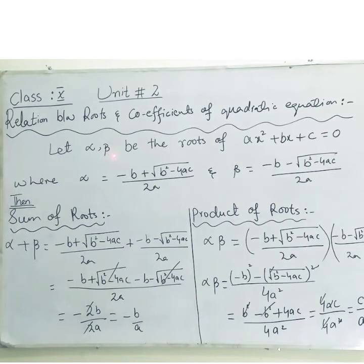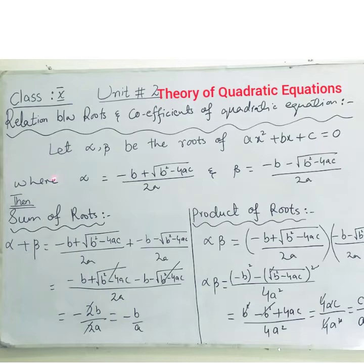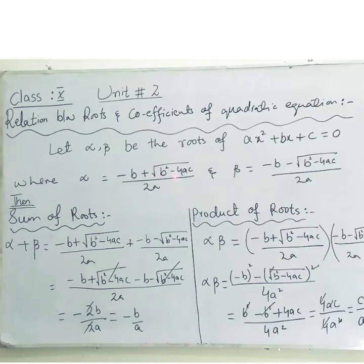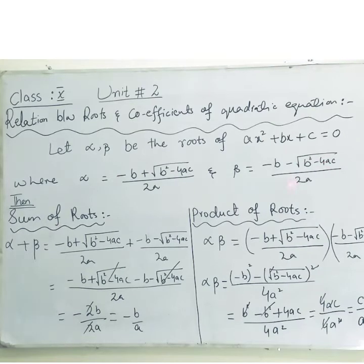Let alpha and beta be the roots of ax² + bx + c = 0, where ax² + bx + c = 0 is the general form of the quadratic equation. One root is (-b + √(b²-4ac)) / 2a = alpha, and the other root is (-b - √(b²-4ac)) / 2a = beta.